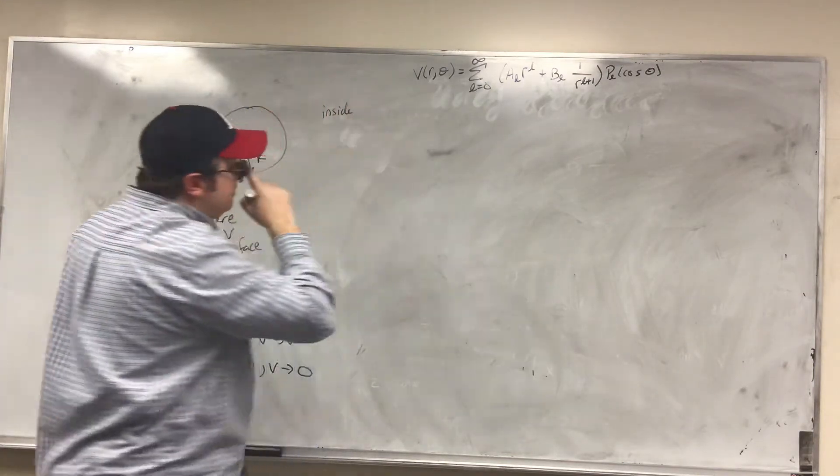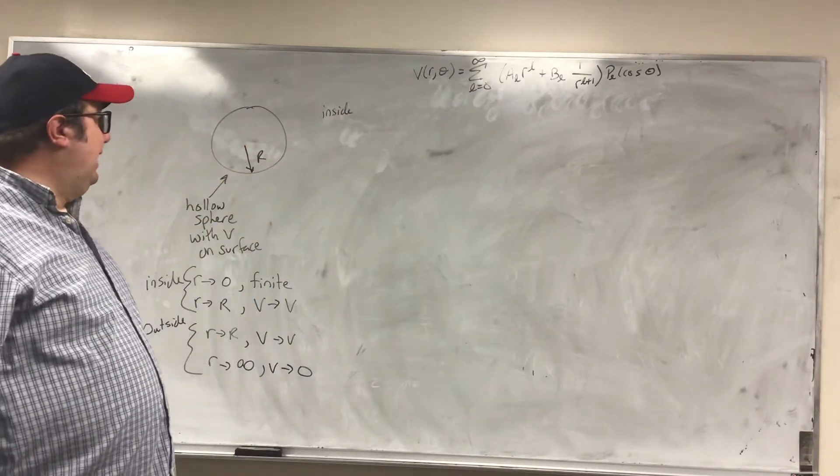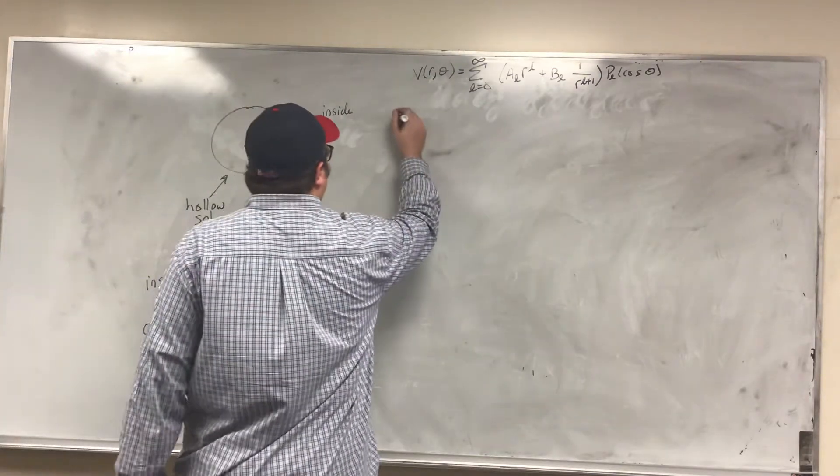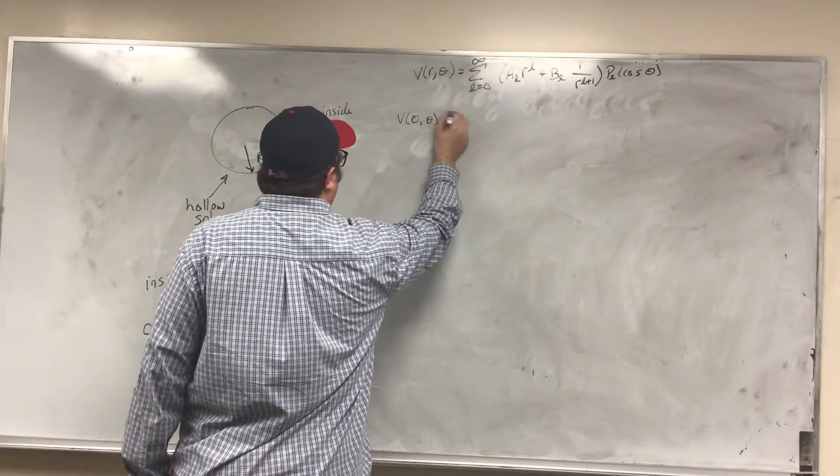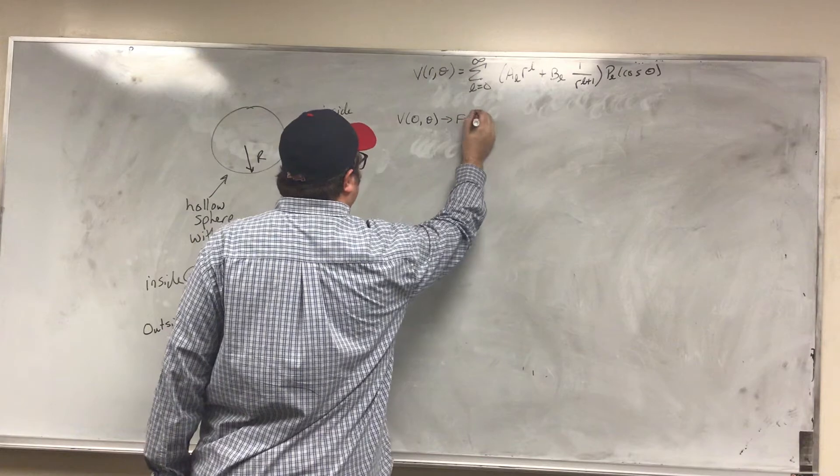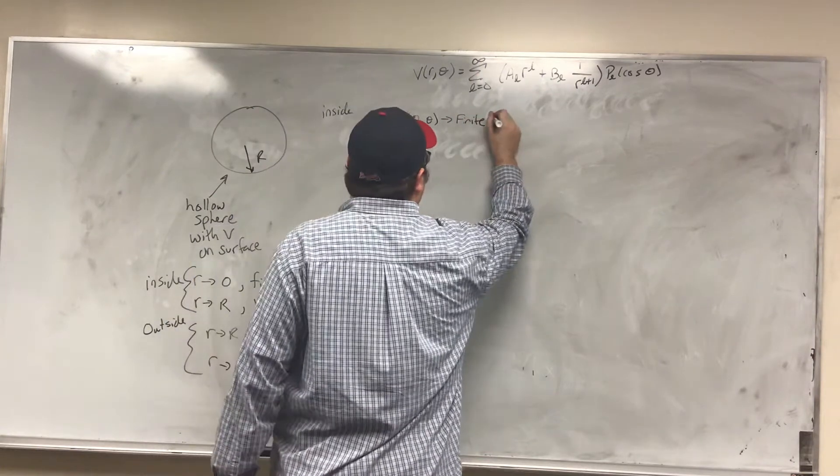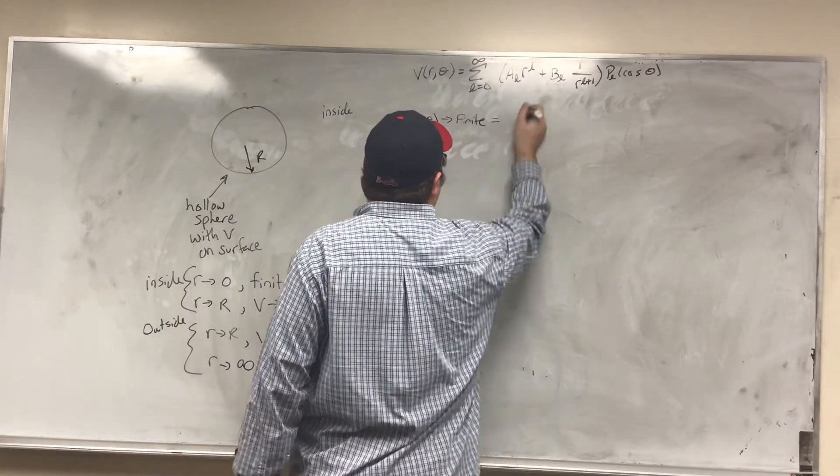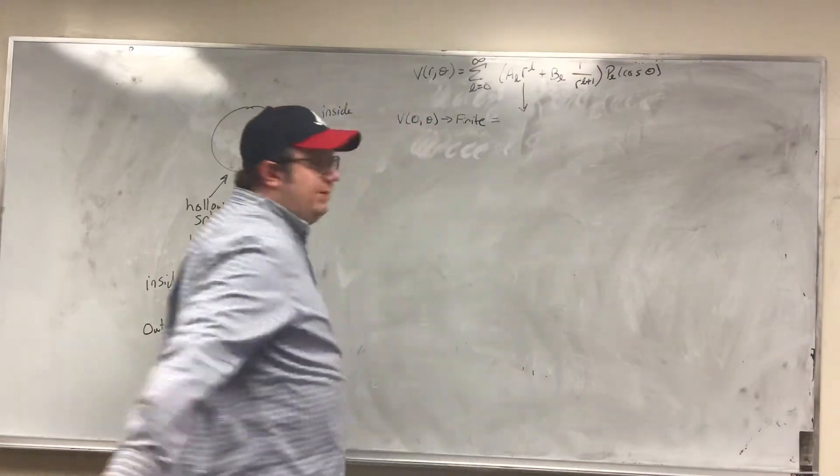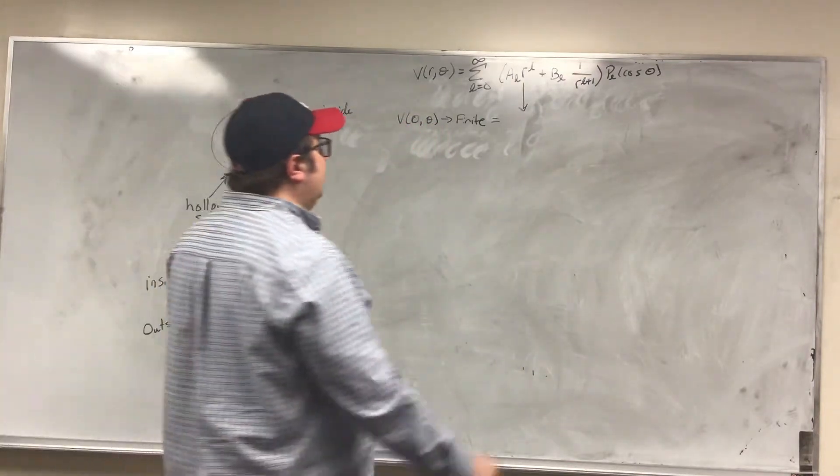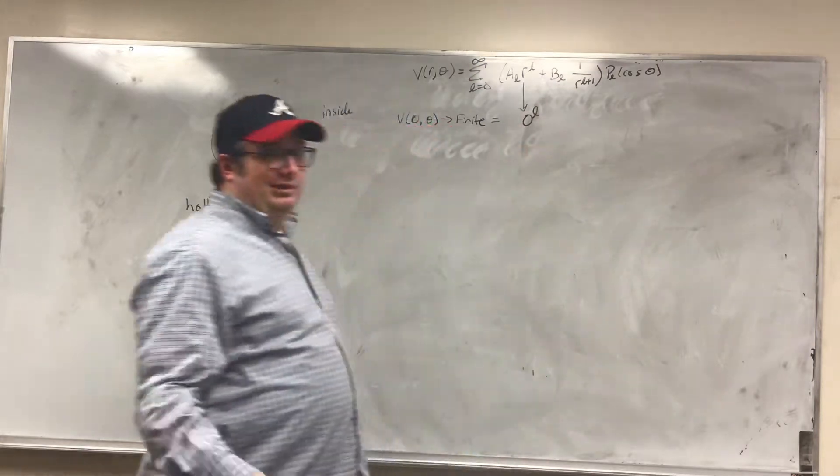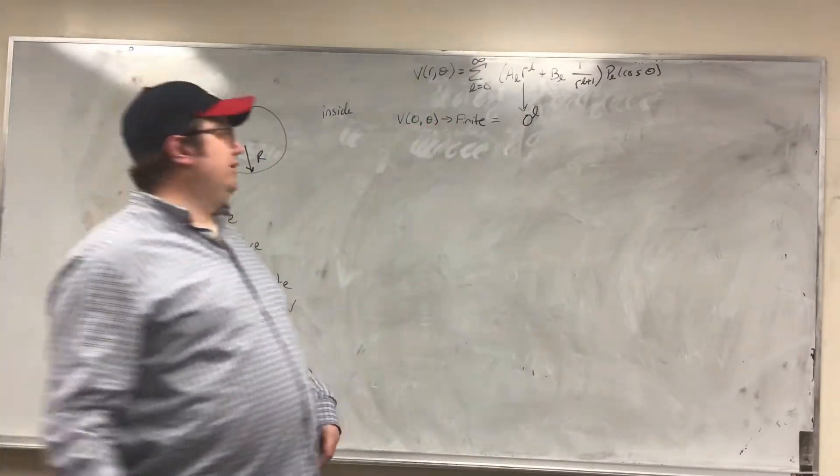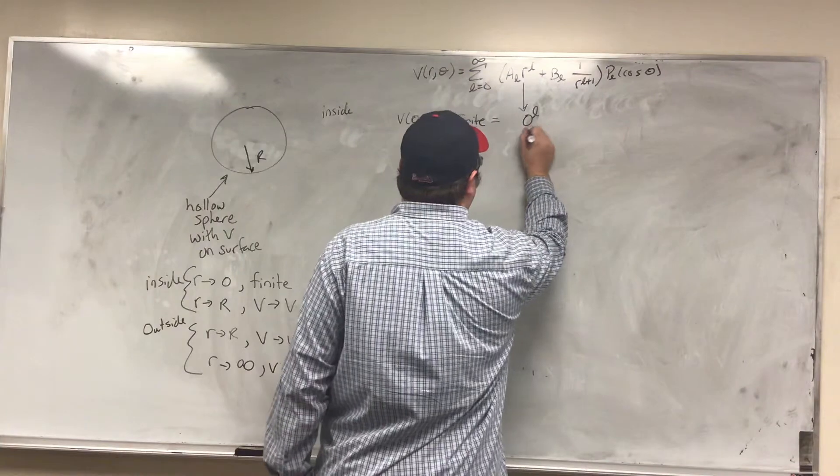Okay, so I know that at R equal to zero, theta, that this must remain finite. So if I look at my solution, what's going to happen to this term at R equal to zero? Well, at R equal to zero, you're going to have something like zero to the L, so it is going to remain finite.